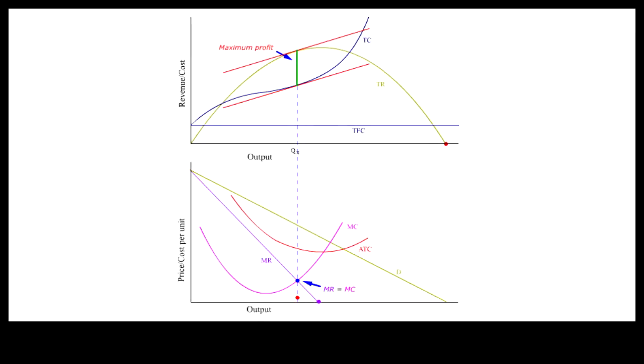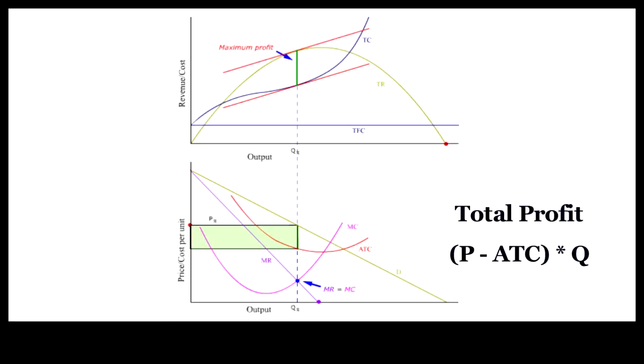At the maximum profit output Q pi, the firm will be able to sell all it produces at P pi, as indicated by the demand curve. At Q pi, the average profit is indicated by the gap between P and ATC. Total profit is indicated by the rectangular area, which is calculated by the average profit per unit times the number of units.